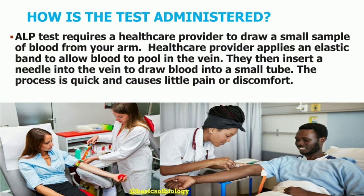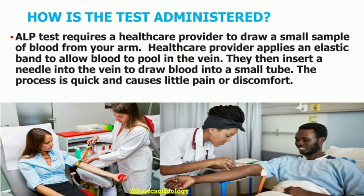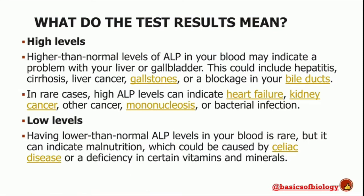An ALP test requires a healthcare provider to draw a small sample of blood from your arm, done in a clinical lab. A healthcare provider cleans the skin on the front side of your elbow with an antiseptic and applies an elastic band to allow blood to pool in the vein. They then insert a needle into the vein to draw blood into a small tube. This process is quick and causes little pain or discomfort.